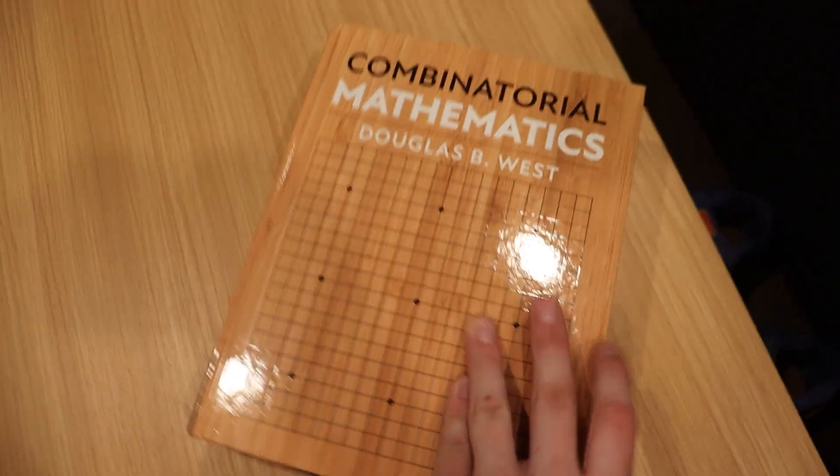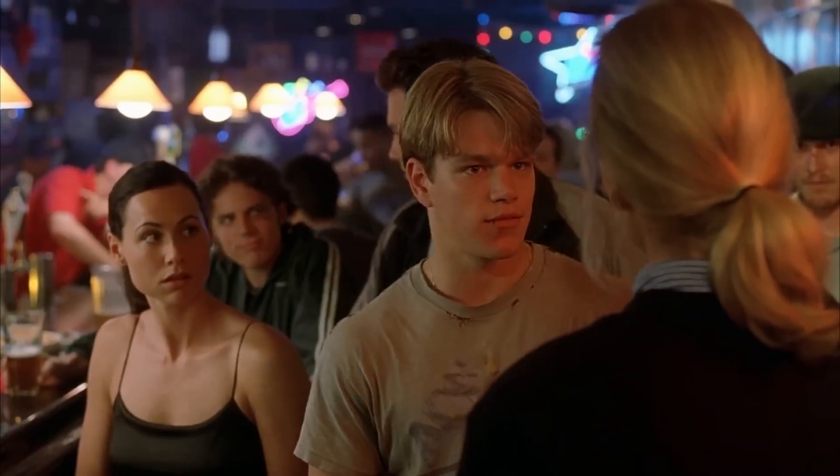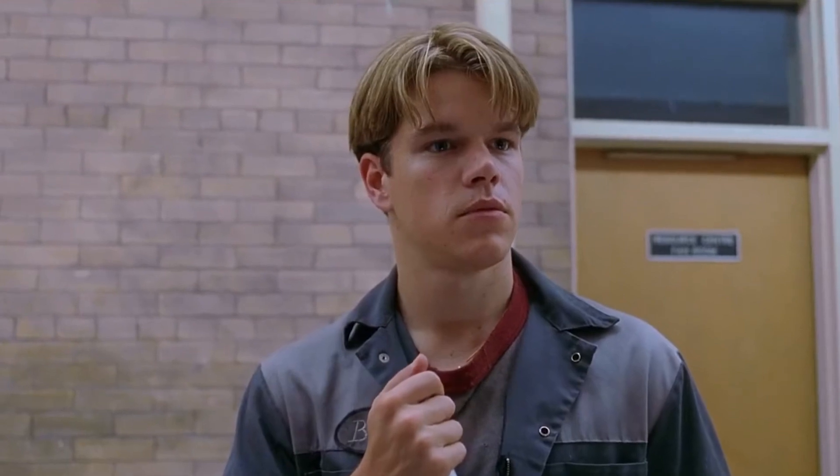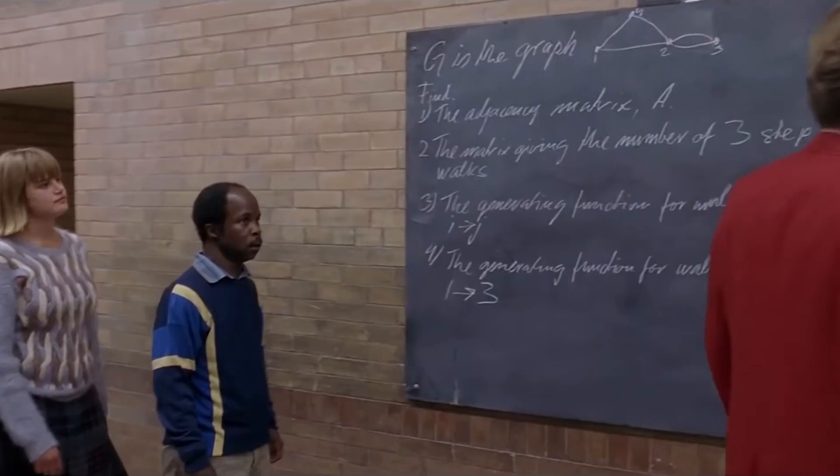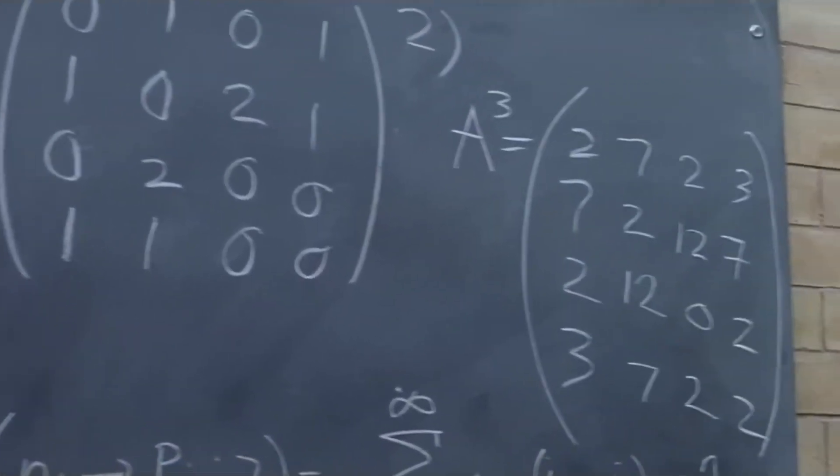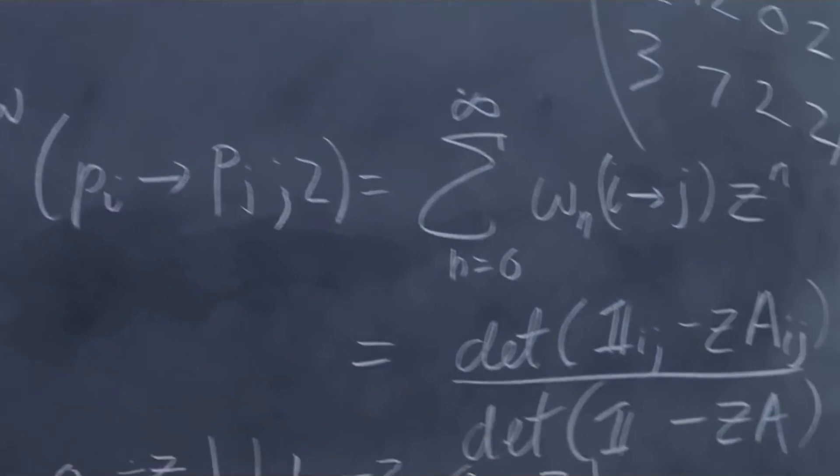The type of math that I focus on is the type that Will Hunting did in Good Will Hunting, which I'm guessing the writers chose because it can hypothetically be done without a lot of background in the subject. Which I find to be kind of bullshit because I have a degree in math and have no clue what's going on a majority of the time.